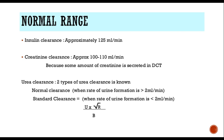The normal range of clearance: inulin clearance measures the GFR very well, which is approximately 125 ml per minute. Creatinine clearance is what we normally use and the approximate creatinine clearance is about 100 to 110 ml per minute. You can see that there is a difference between inulin clearance and creatinine clearance, and this difference is because a small amount of creatinine is secreted in the distal convoluted tubules. Urea clearance test is not being done because urea gets absorbed in the loop of Henle.